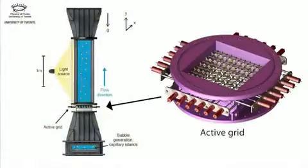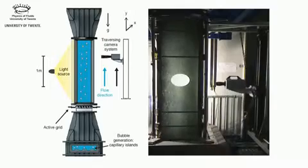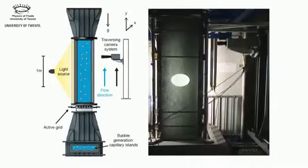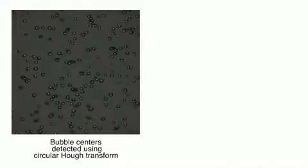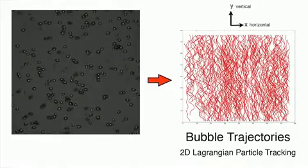An active grid generates homogeneous and isotropic turbulence. This is a live experiment where the camera on the right rises along with the bubbles. You see the bubbles being frozen as they rise along. We detect these bubble centers and then do a standard 2D particle tracking to obtain their trajectories.